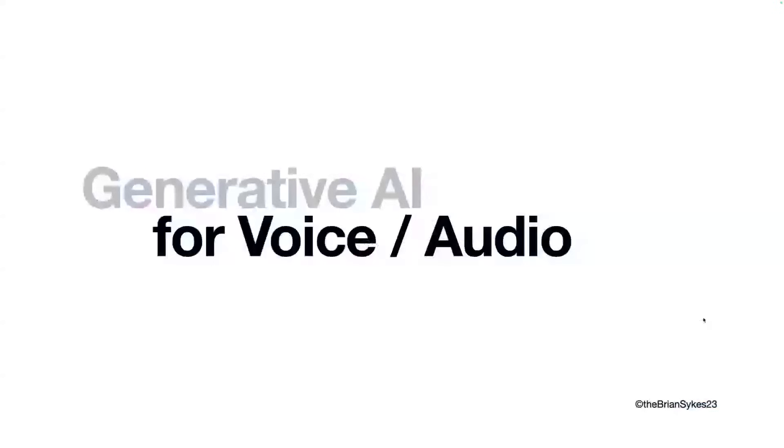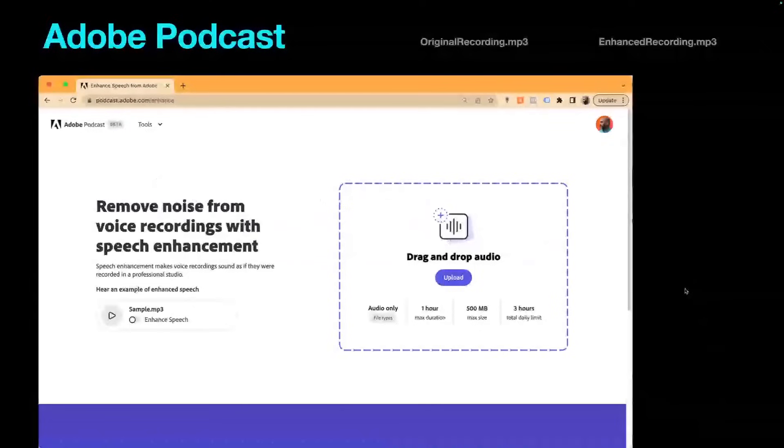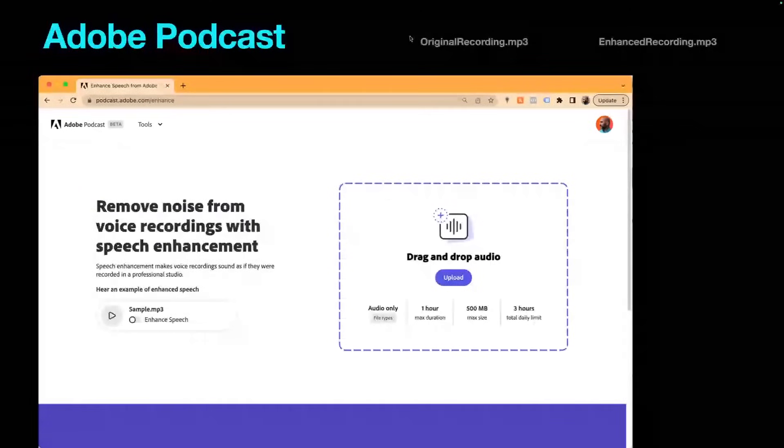Generative AI for voice and audio. Working in the podcasting and video realm, there are some really interesting tools. The sound quality difference from before versus what you can do with Adobe Podcast is significant. Right now it's free, with up to an hour max upload duration. It refines sound quality significantly — removes all the hum, buzz, and background noise — and it sounds like you're speaking directly into a microphone in a professional setting.